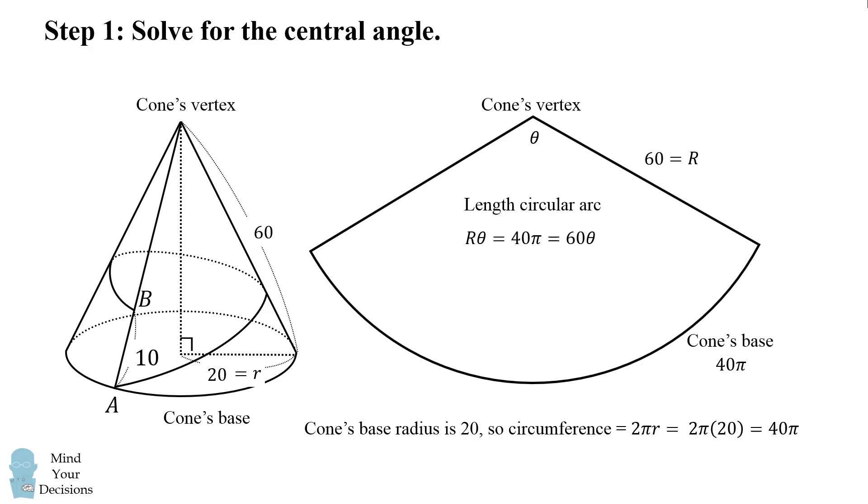So the length of the circular arc is r times θ. So here we know the length is 40π, and r times θ is 60θ. So we can solve that θ is equal to 2π over 3. So that's the central angle.